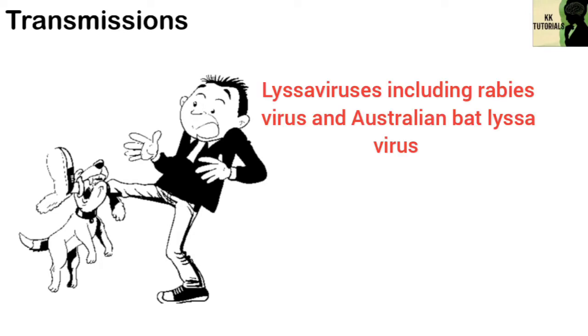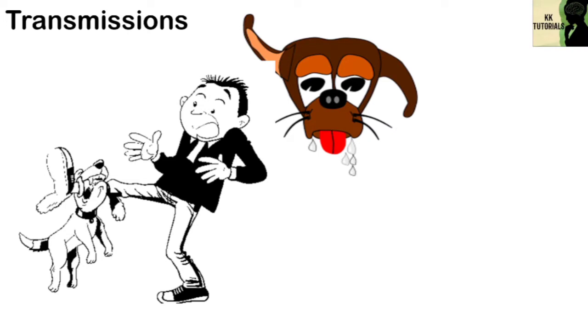People usually get rabies from the bite of a rabid animal. Rabies is caused by Lyssavirus, including the rabies virus and Australian bat Lyssavirus. Saliva from an infected animal can also transmit rabies if the saliva comes into contact with the eyes.